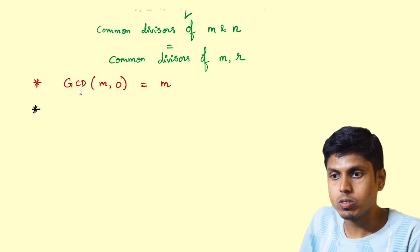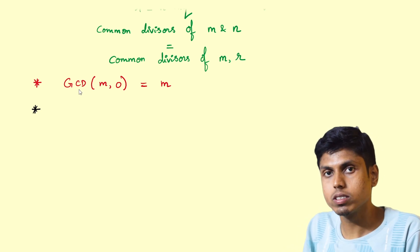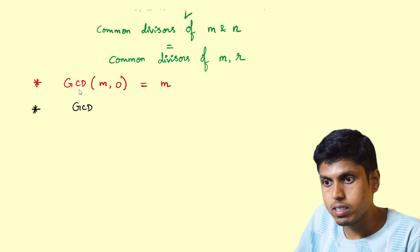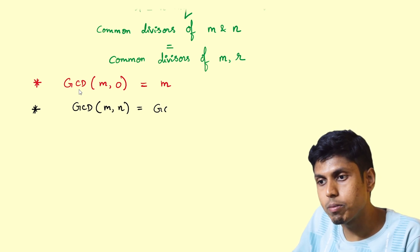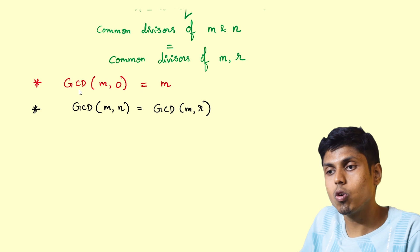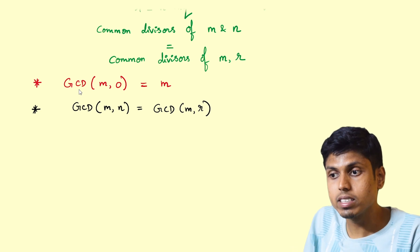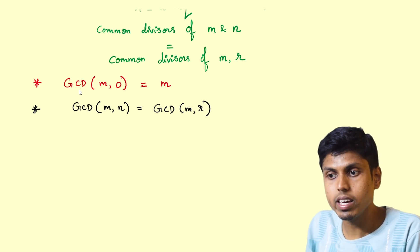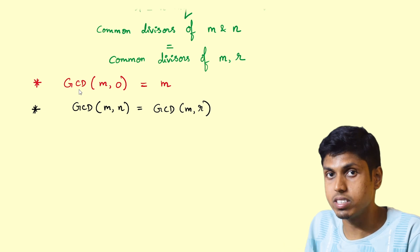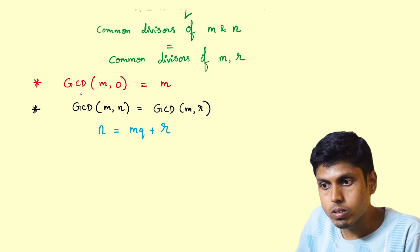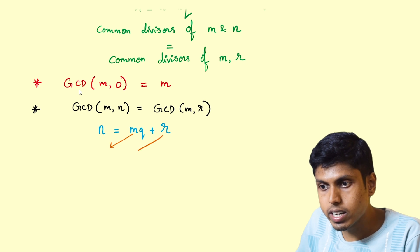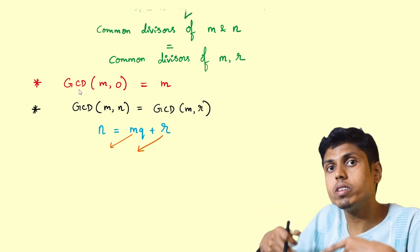Let's now move on to the Euclidean algorithm. The Euclidean algorithm works on the fact that GCD of m comma n equals GCD of m comma r, which was the divisor and remainder GCD equal to divisor and dividend's GCD. Writing in other way, n is equal to mq plus r.